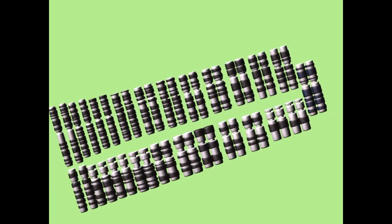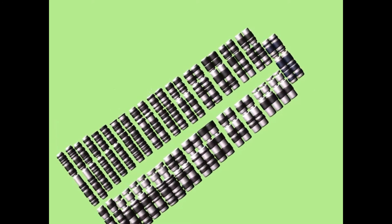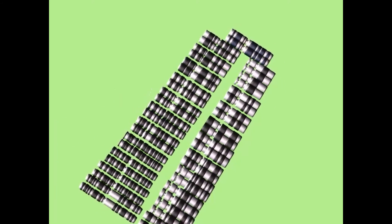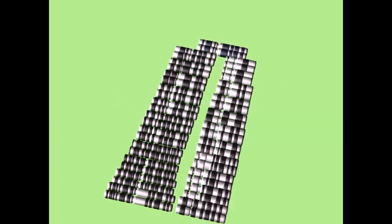When cells divide by mitosis, both daughter cells receive all 46 chromosomes present in the diploid count of the parent cell.